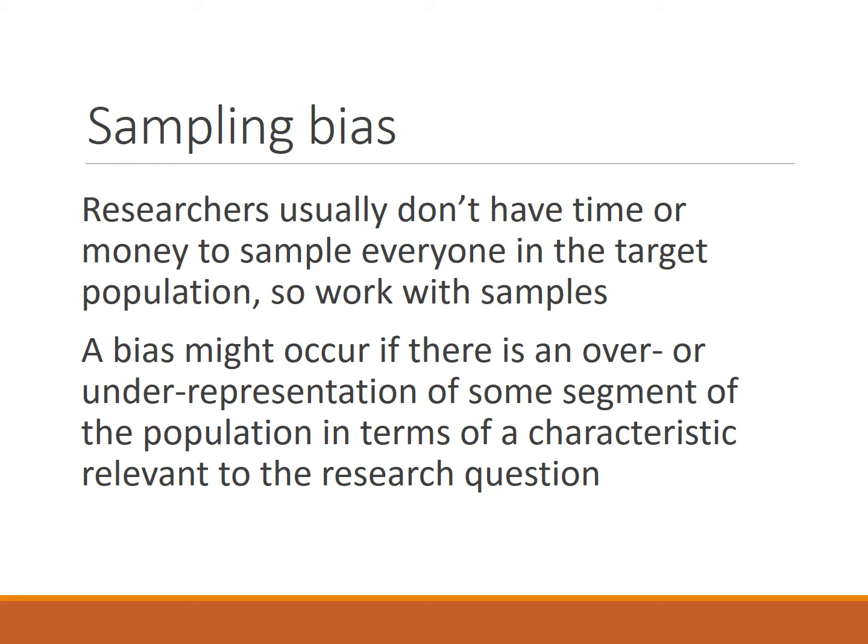As you look at data, you have to think about whether this sample truly is representative of the full target population. If not, we have what's called a sampling bias. In a sampling bias, we are over-representing or under-representing by some characteristic. For example, if we were interested in access to health care and we survey people by standing in front of a medical clinic, we may be sampling people who have access to health care and not those who don't.